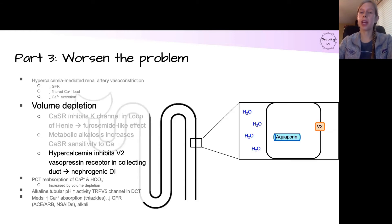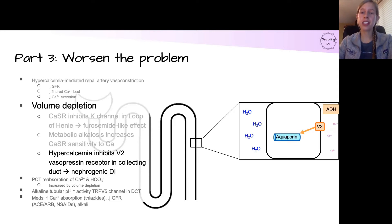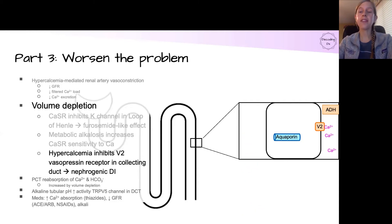Over in the collecting duct, we have the V2 receptor, which binds to and responds to ADH or vasopressin. Normally, when this receptor is activated, it triggers aquaporins to move into the membrane to then absorb free water. In the presence of hypercalcemia, the calcium will actually inhibit that V2 receptor so that the signal never actually reaches the aquaporins, and the free water is just lost into the urine. This leads to a nephrogenic diabetes insipidus and further worsens both the volume depletion and the hypercalcemia as we are losing free water.